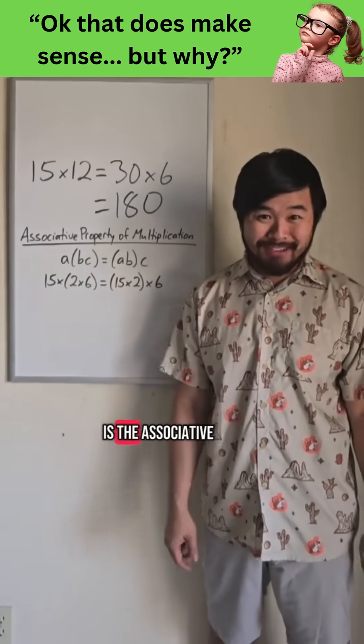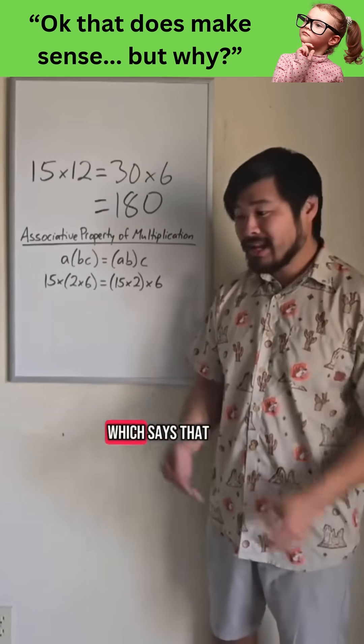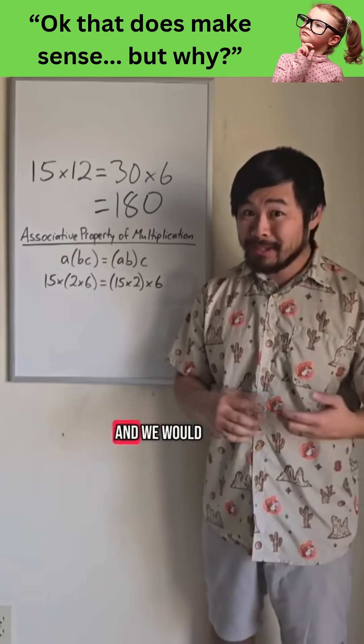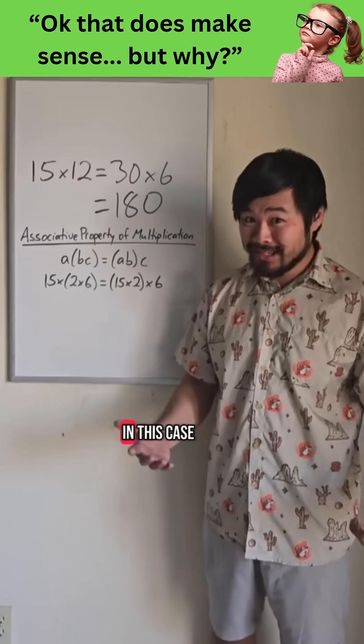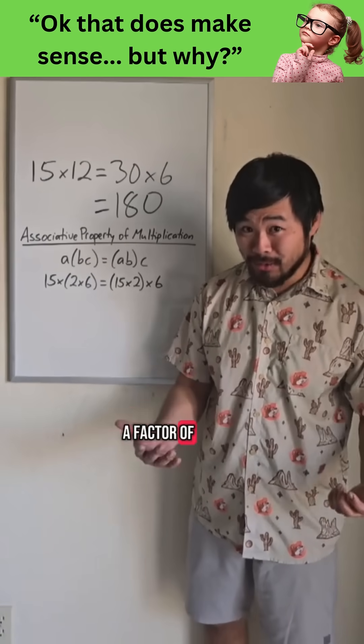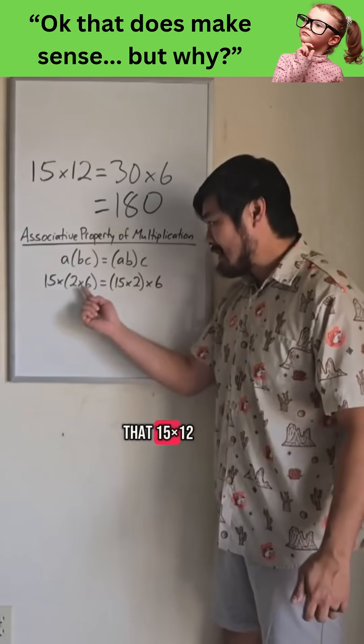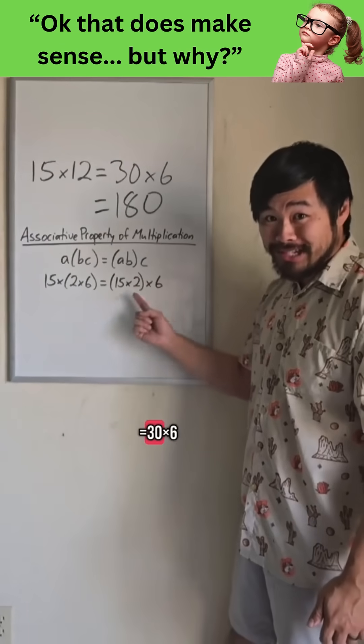Now what's happening is the associative property of multiplication, which says that we can move factors around and we would still get the same product. In this case, we're just moving a factor of 2 around. So we see that 15 times 12 equals 30 times 6.